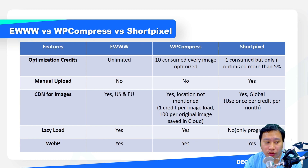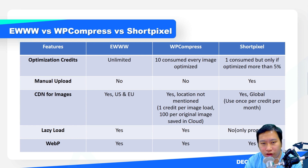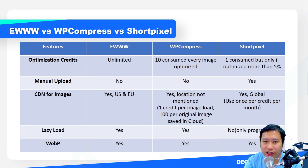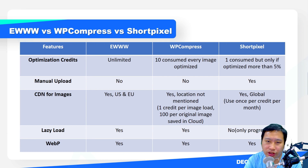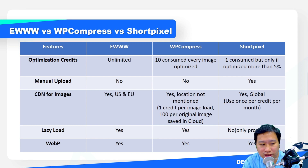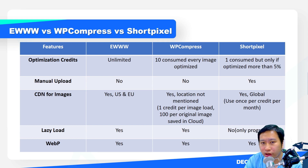All three plugins provide WebP support. However, for Ewww and WP Compress, converting images to WebP does not consume any additional credits. For Short Pixel, creating a WebP version of your image takes up an additional credit on top of the regular compression credit. This is where Short Pixel can start consuming a lot of credits.